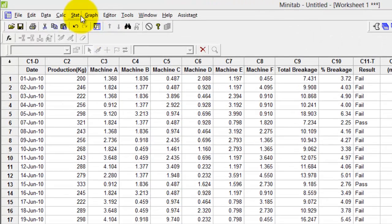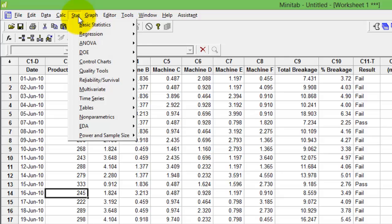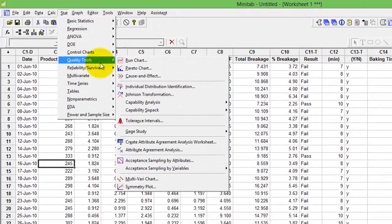The run chart option is in the Stats menu. Click Stats, go to Quality Tools, click Run Chart.